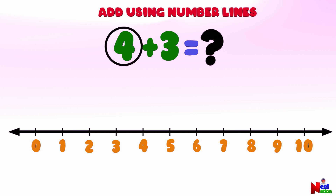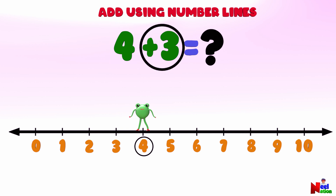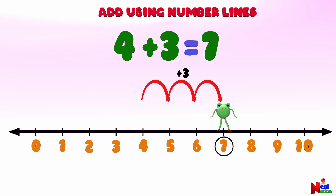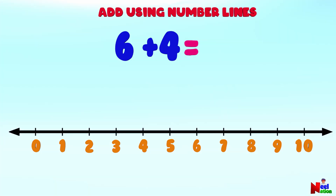Next, what is 4 plus 3? Can you find number 4 on the number line? Good. To add 3 to number 4, starting from number 4, Mr. Lutu will jump three points forward to the right. 1, 2, 3. Where has he landed? Number 7! There you go. 4 plus 3 equals 7. Awesome job!